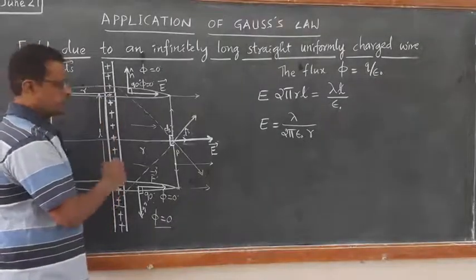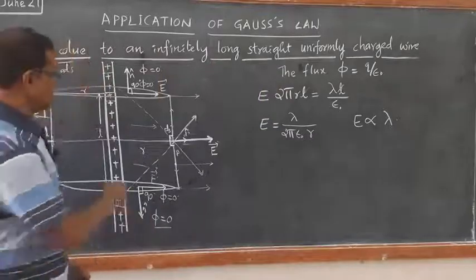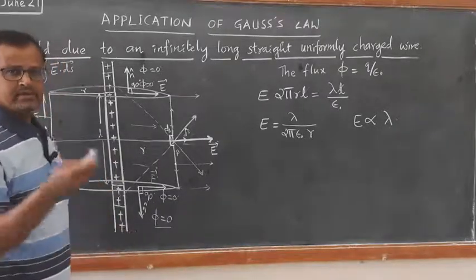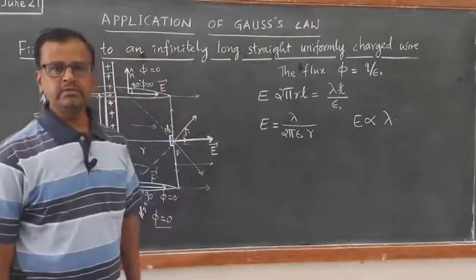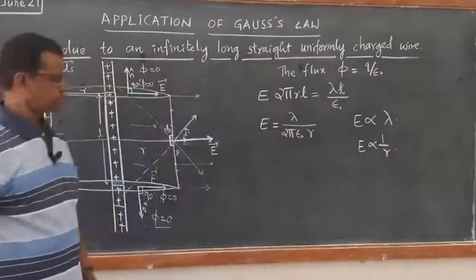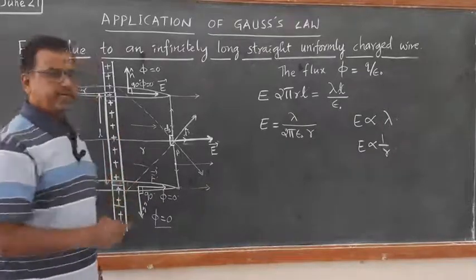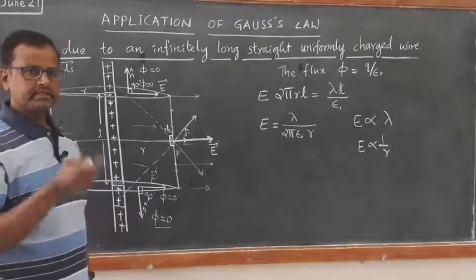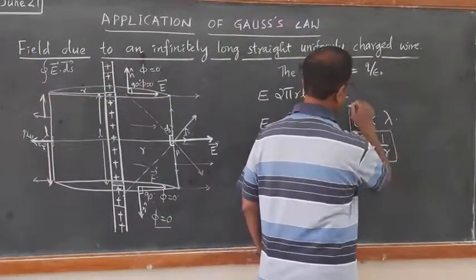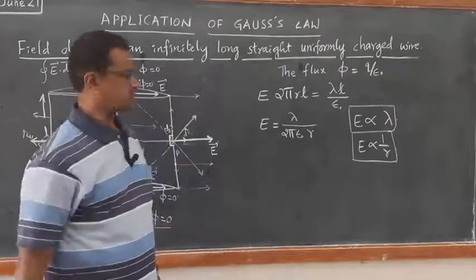This implies that the electric field is directly proportional to the charge density lambda: more charge per unit length means stronger electric field and vice versa. The electric field is also inversely proportional to the distance r — not the square of the distance. This is a very important point to remember. For a point charge it is inversely proportional to the square of the distance, but for a linear charge distribution, it is inversely proportional to the distance.